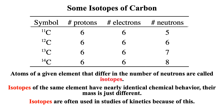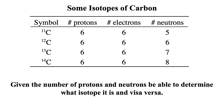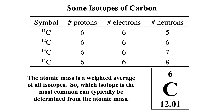Isotopes of the same element have identical chemical behavior — their mass is just slightly different. Isotopes are often used in studies of kinetics to identify the actual mechanism for a reaction. Given the number of protons and neutrons, you should be able to determine what isotope it is, and if given the isotope, you should be able to determine how many protons and neutrons it has.